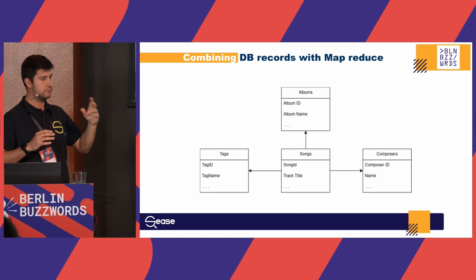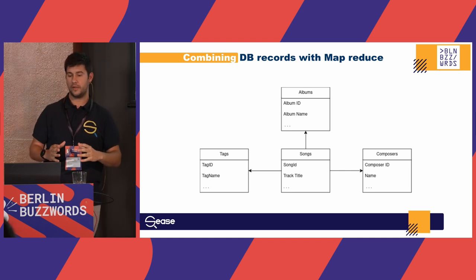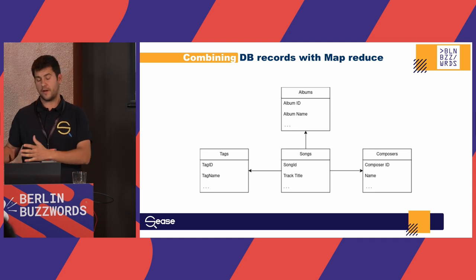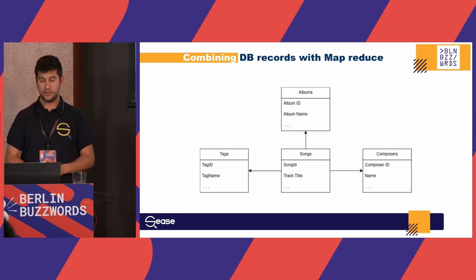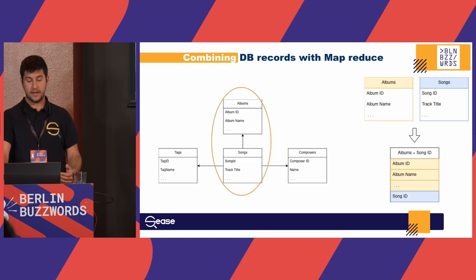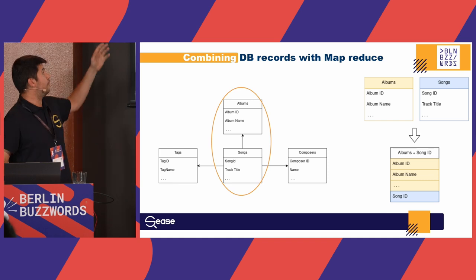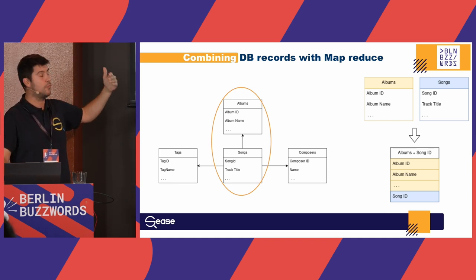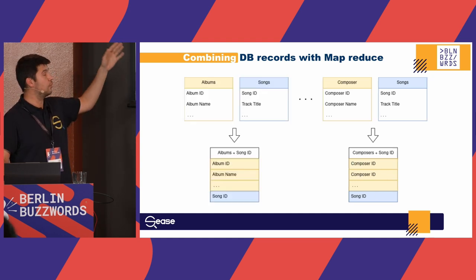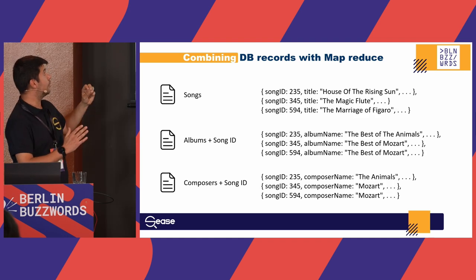Coming back to our example, we have songs and other tables like albums, tags, and composers. First we identify our key — in the final index, documents are identified by song ID. For each table and each piece of information we want to assign the song ID. So we extract the songs table, then for each table we join what we need to get the song ID — for albums we extract album name and album information plus the song ID, for composers all composer information and the song ID. These are simple queries. We store all results in files.